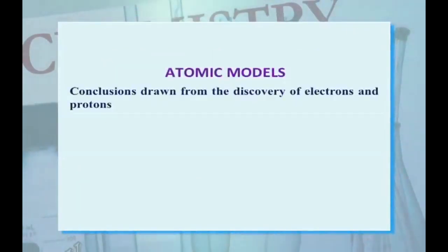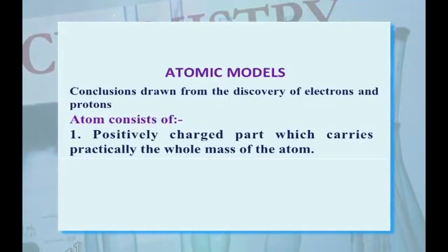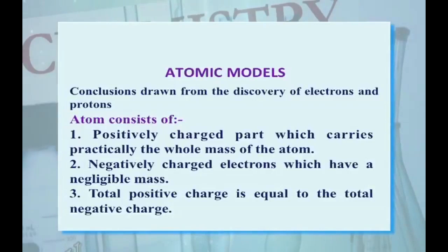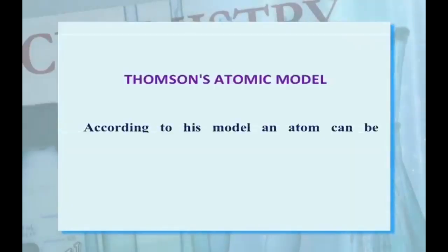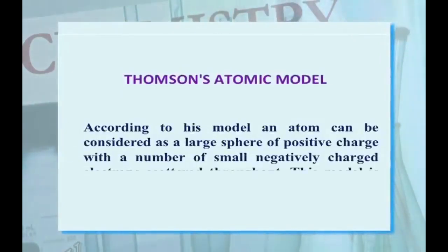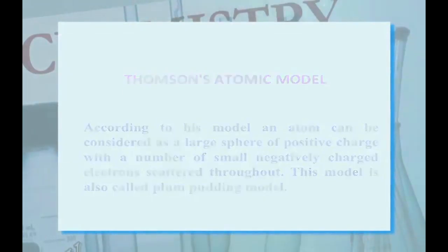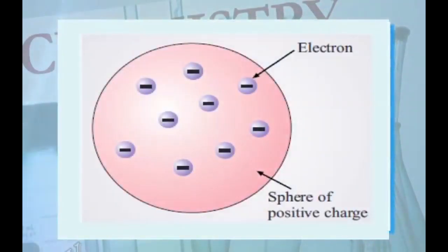Atomic models. Conclusions drawn from the discovery of electron and proton: first, an atom consists of a positively charged region which carries practically the whole mass of the atom; second, negatively charged electrons which have negligible mass; third, the total positive charge is equal to the total negative charge. Thomson's atomic model: according to this model, an atom can be considered as a large sphere of positive charge with a number of small negatively charged electrons scattered throughout. This model is also called the Plum-Pudding model, where the sphere indicates the positive charge and the negative charge is embedded or scattered within it.